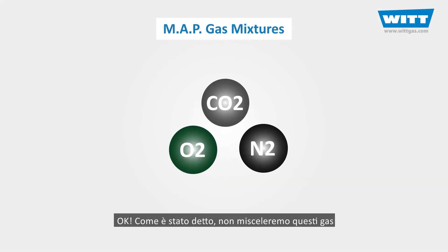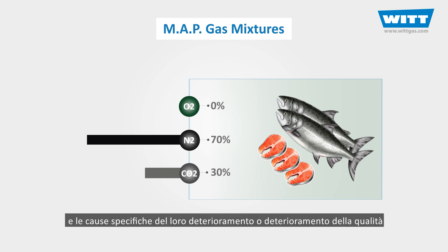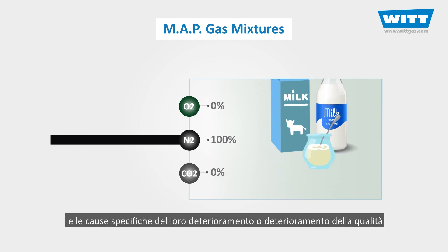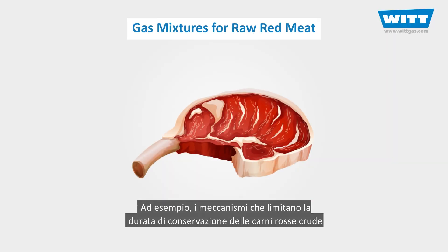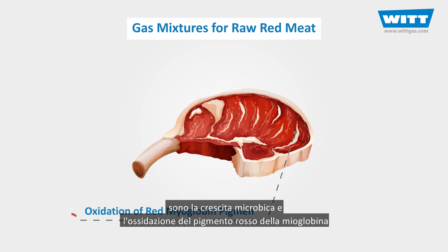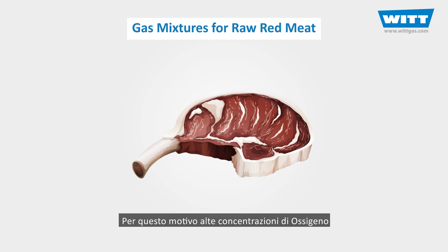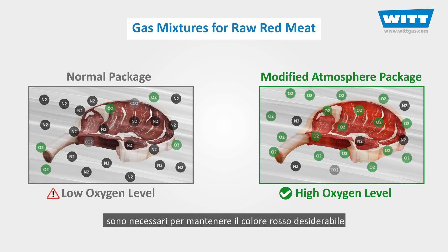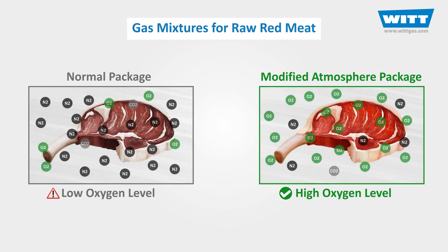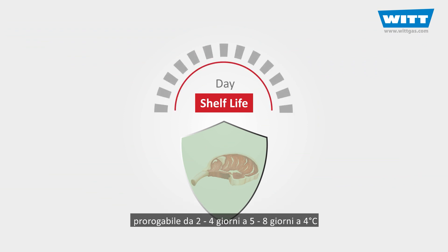We don't mix these gases in the same way for all kinds of foods. Depending on the type of food product and the specific causes of spoilage or quality deterioration, the gas mixture will be different. For example, the mechanisms that limit the shelf life of raw red meats include microbial growth and oxidation of the red myoglobin pigment, converting it to oxidized brown metmyoglobin. For this reason, high concentrations of oxygen are necessary to maintain the desirable red colour for a longer period. With the right mixtures, the practical shelf life of consumer-packed meat can be extended from 2–4 days to 5–8 days at 4°C.